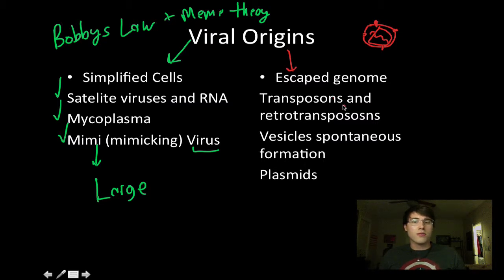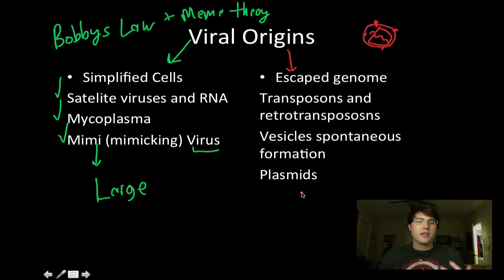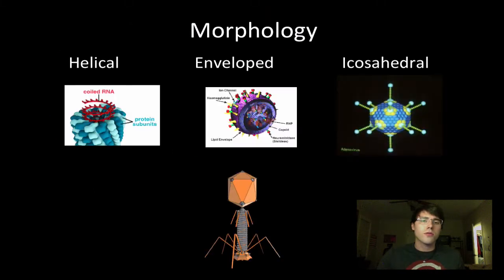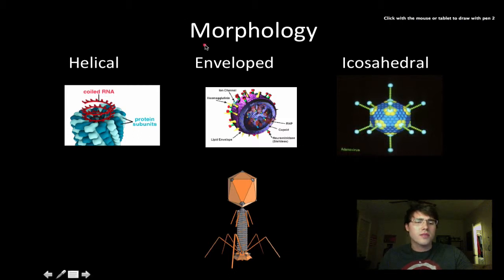The fact that transposons and retrotransposons code for elements found in viral genomes is significant. Also, vesicles can form spontaneously, and bacteria are moving plasmids from one cell to the next. It's not too crazy to think that during that process, plus a lot of the membrane unfolding, something like a virus could have formed.